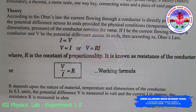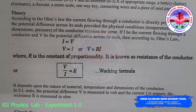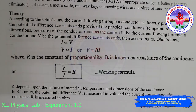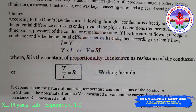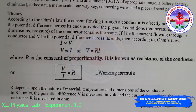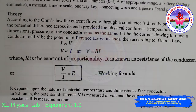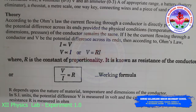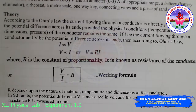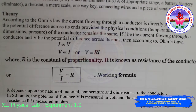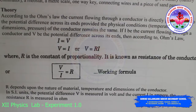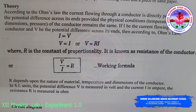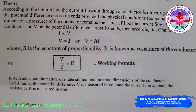According to Ohm's law, the current flowing through a conductor is directly proportional to the potential difference across its ends, provided the physical conditions — temperature, dimensions, and pressure — of the conductor remain the same. If I is the current flowing through a conductor and V is the potential difference across its ends, then V is directly proportional to I, so V equals IR, where R is the proportionality constant. Therefore R equals V divided by I, and its SI unit is ohms.